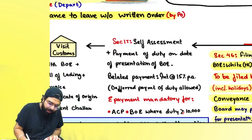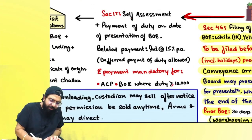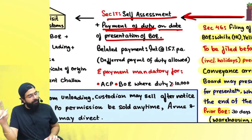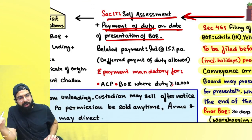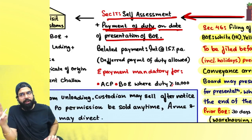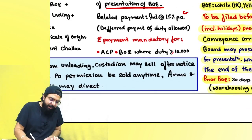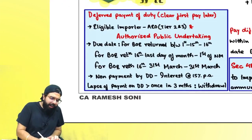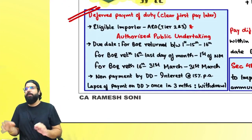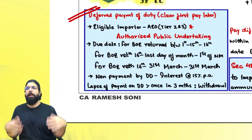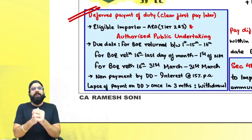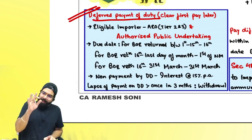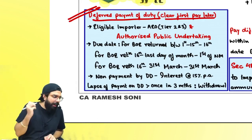Once goods have come, you file a bill of entry, do self-assessment, and make the payment of duty on the date of presentation of the bill of entry. If you don't pay duty on the date of filing, interest at 15% per annum is payable. Deferred payment of duty — a clear-now-pay-later or postpaid facility — is also allowed.